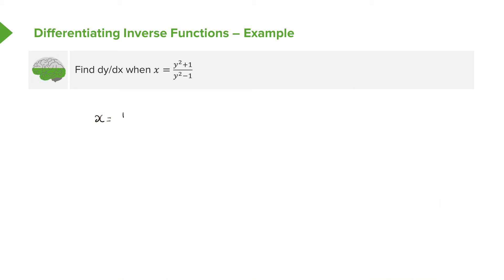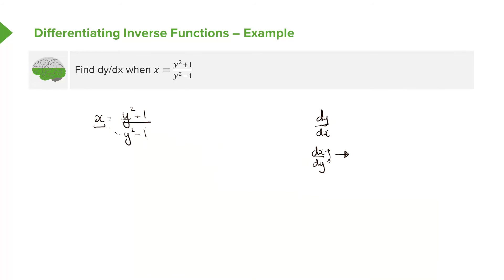Given the function x equals y squared plus 1 over y squared minus 1, we said there are two things you could do: make y the subject, which in this case will be complicated, or take the expression to the other side and use implicit differentiation. But there is another way — by keeping our objective of finding dy/dx, we can instead calculate dx/dy by differentiating x in terms of y, and then simply flip the fraction to change it back to dy/dx.